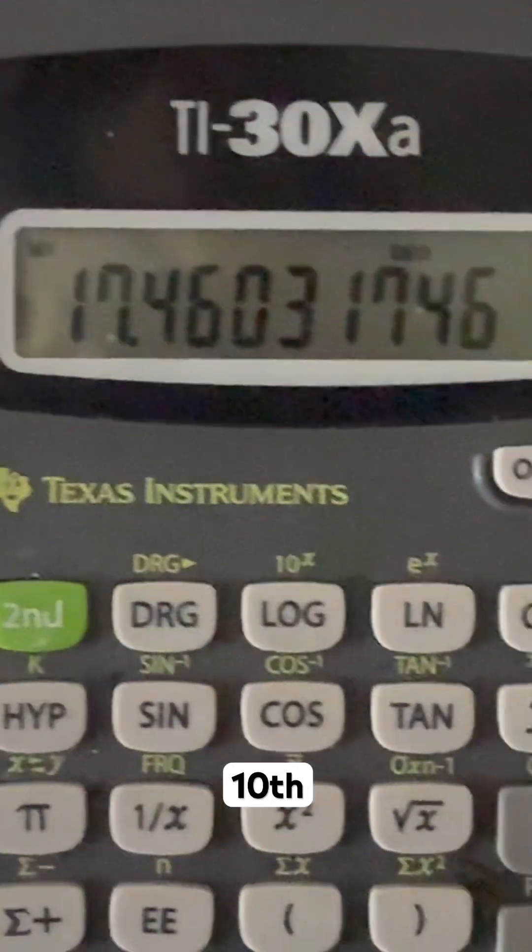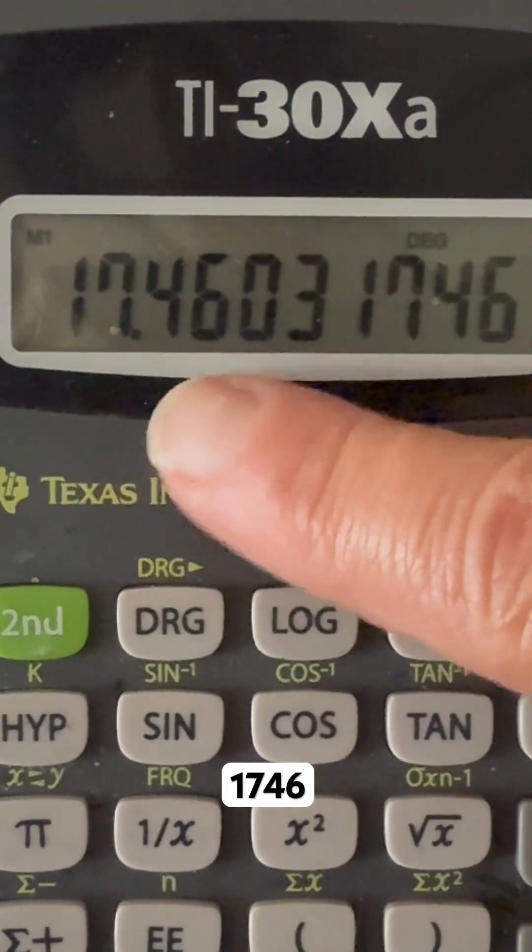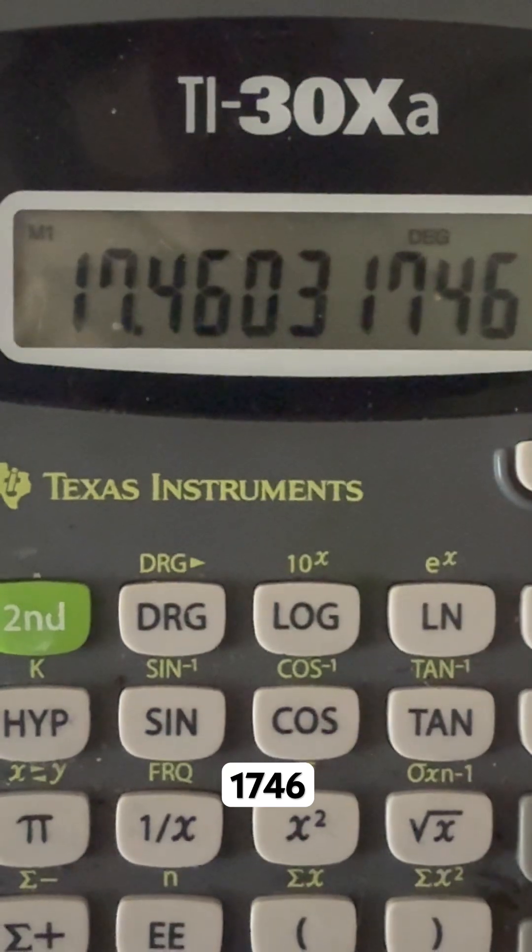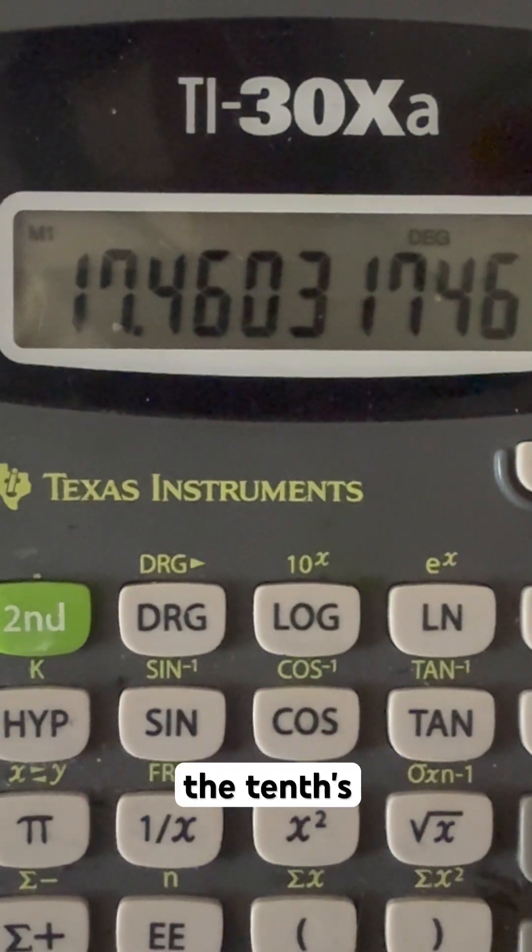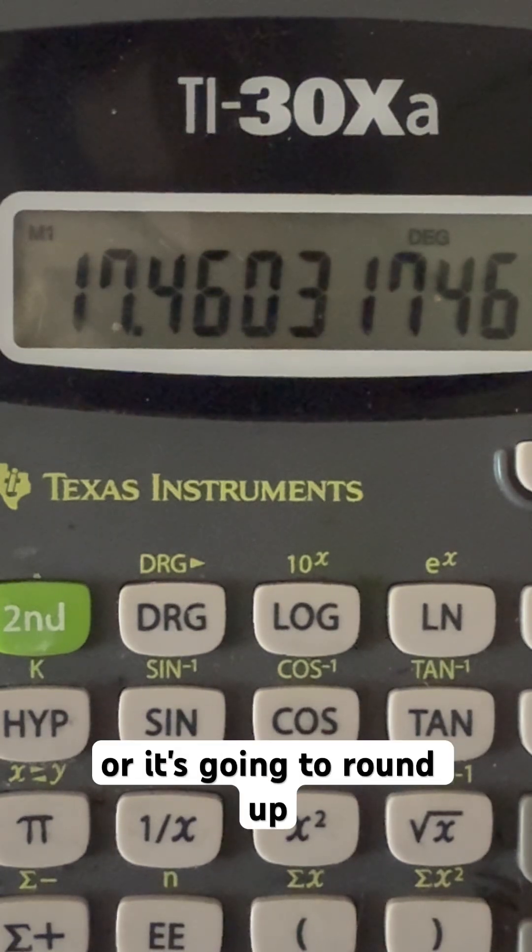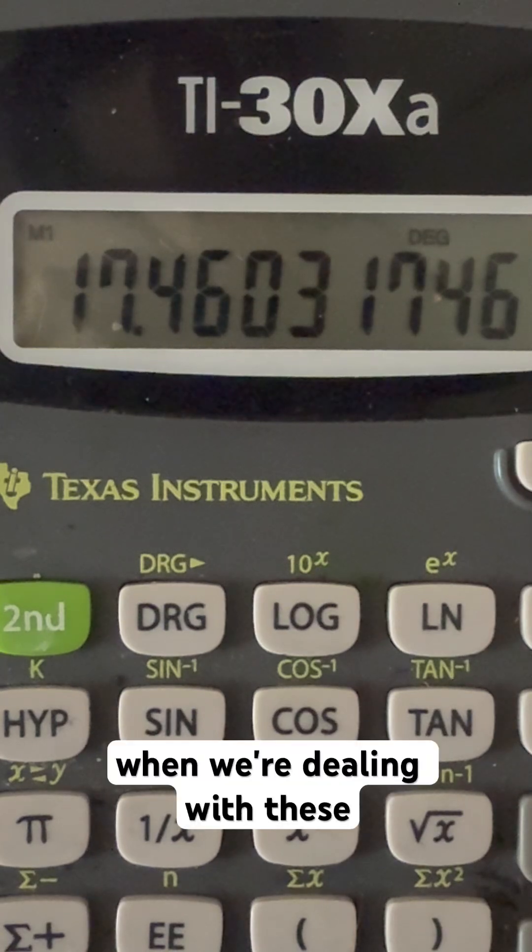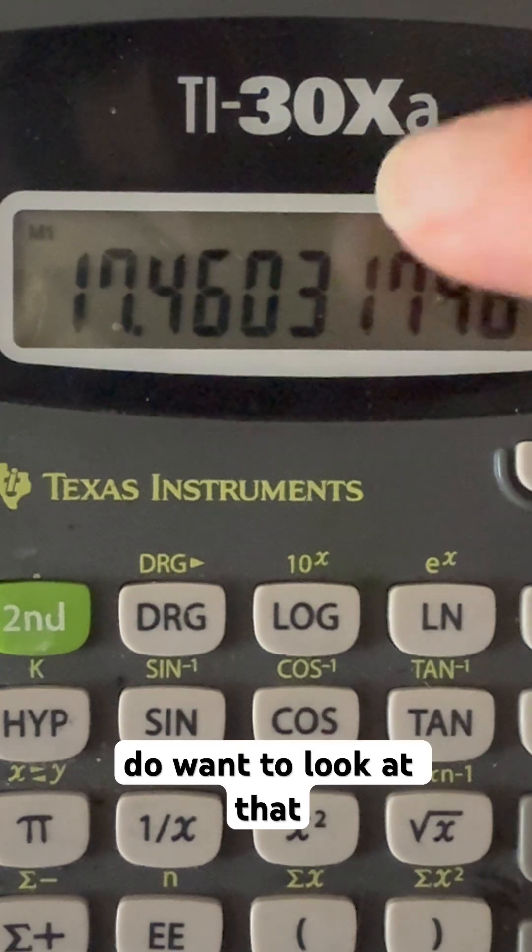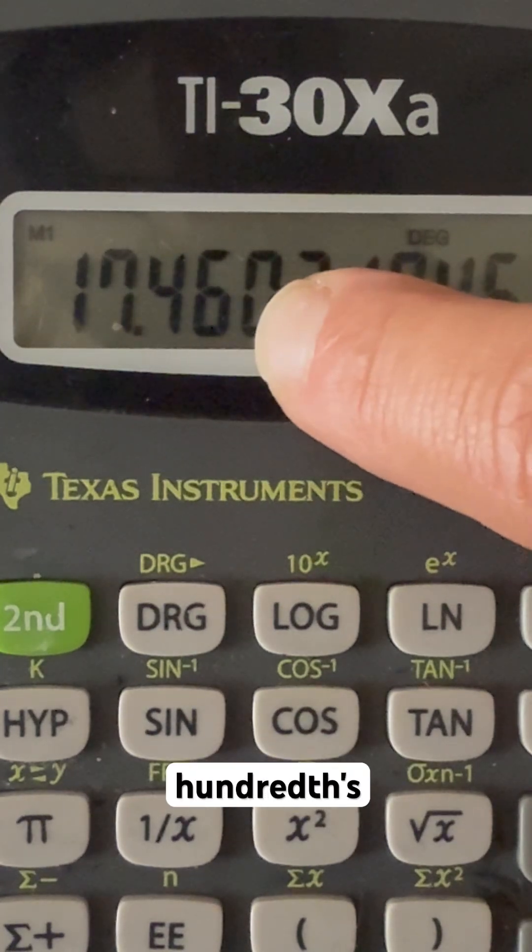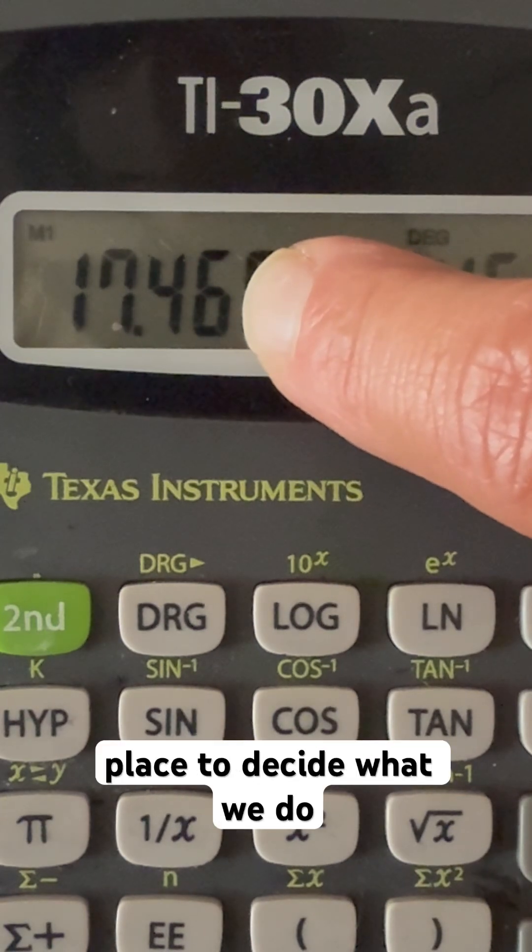Now we're rounding to the nearest tenth. This is super duper important that we're looking at it. This is 17.46. I want to look at the tenth. The tenth place is the 4. So we know it's either going to be 4 or it's going to round up to 5. This is a problem people have all the time. So when we're dealing with these, you do want to look at that 6. That's the hundredth place. You want to check that. And if we're looking for the tenth, we need to look at the hundredth place to decide what we do with the number.